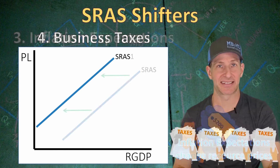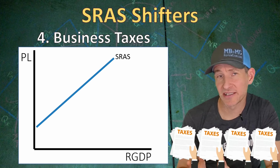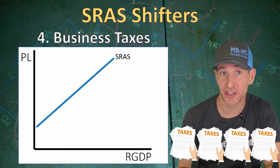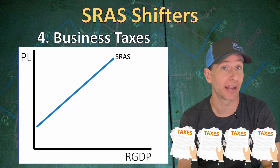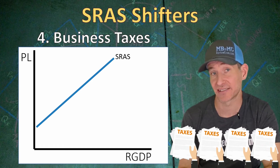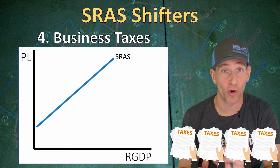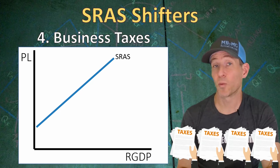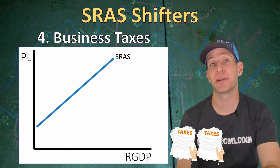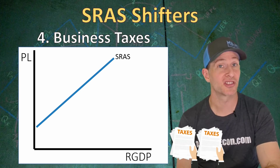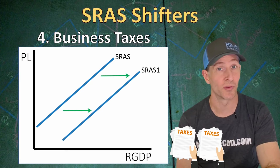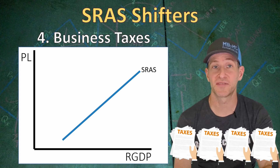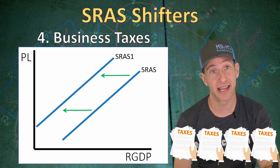Fourth, we have business taxes. If your AP economics exam is talking about changes in taxes generally, that's probably going to be an aggregate demand shifter because of changes in consumer income. But if they specify changes in corporate taxes or business taxes, that's going to be a short run aggregate supply curve shifter. When business taxes decrease, that means lower production costs, and that shifts our short run aggregate supply curve to the right. But if business taxes were to increase, that means higher production costs, shifting our short run aggregate supply curve to the left.